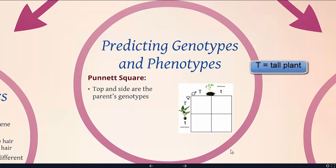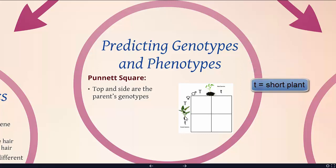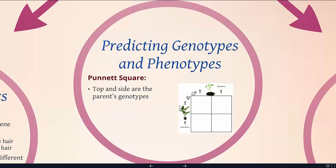So this plant has a genotype big T, little t, and this plant also has a genotype big T, little t. What we're representing here is the results of meiosis. If you take a plant that is big T, little t and go through meiosis, dividing up the chromosomes, half of the gametes will have the big T and half will have the small t — and the same thing happens for the other parent. Basically, we've created some pollen and some eggs to be fertilized.